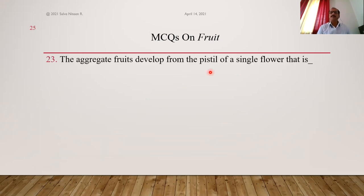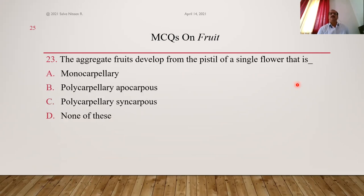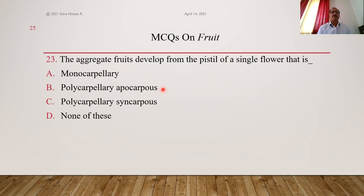Aggregate fruits develop from the pistil of a single flower — specifically from a polycarpellary apocarpous gynoecium, where many carpels are not fused and therefore there are many ovaries in a single flower. Simple fruits develop from monocarpellary or polycarpellary syncarpous gynoecium. Answer is B, polycarpellary apocarpous.